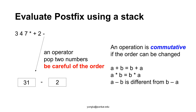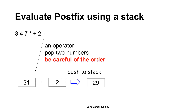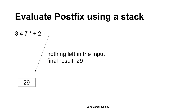Commutative means whether we can change the order of operands. For example, a plus b is the same as b plus a, and multiplication is also commutative: a times b equals b times a. Subtraction, however, is not commutative — a minus b is different from b minus a. Thus, we take the second number from the top of the stack as the first operand, and the top number as the second. The result is 31 minus 2, and the answer 29 is pushed to the stack as the final result.